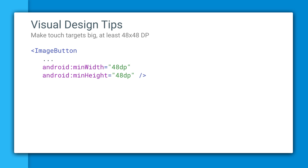Keep your touch targets large — at least 48 by 48 dp. This makes them easier to distinguish and touch.